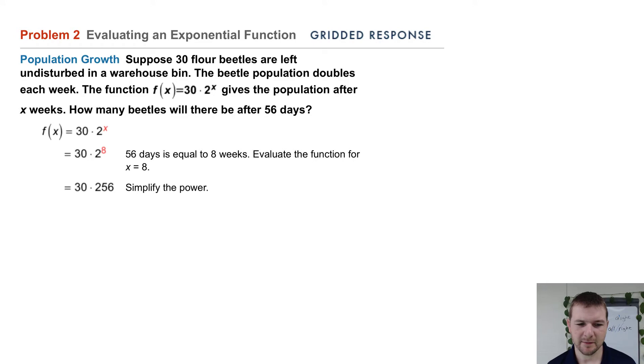And simplify: that will be 30 × 256 or 7,680. So now we can state after 56 days there will be 7,680 beetles.